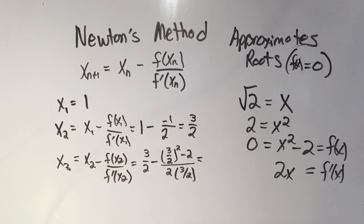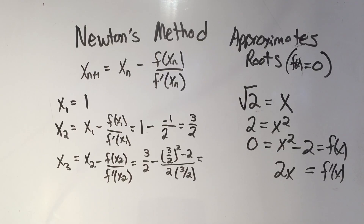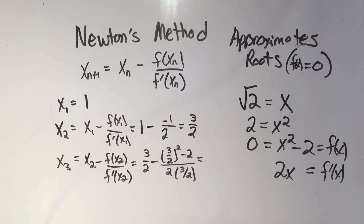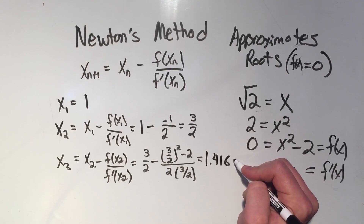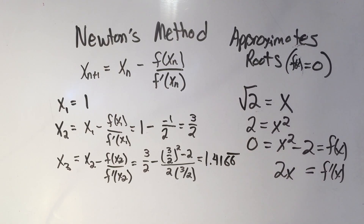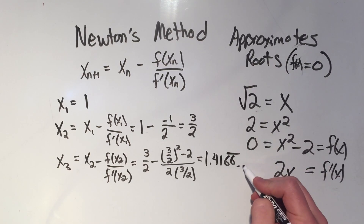At this point I would start using a calculator. So I've got a calculator here and I'm just going to plug this right in. Hopefully I punched that in correctly and I'm getting 1.416 repeating for a little while — I got a bunch of 6's and then a 7.